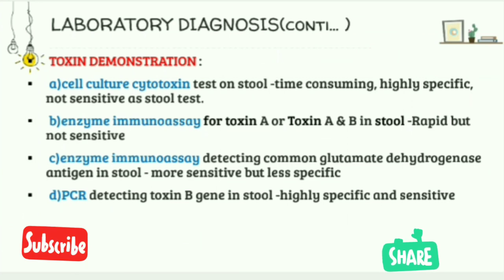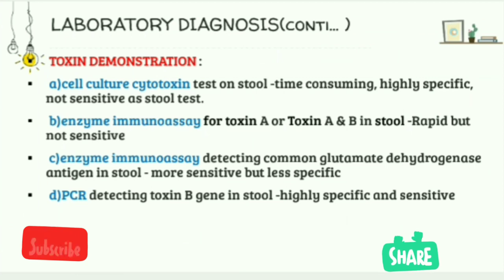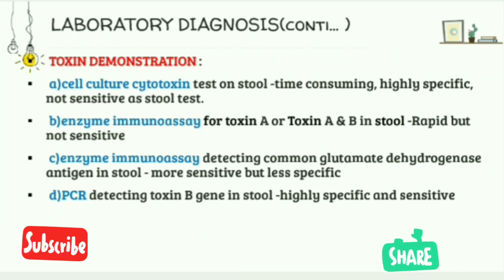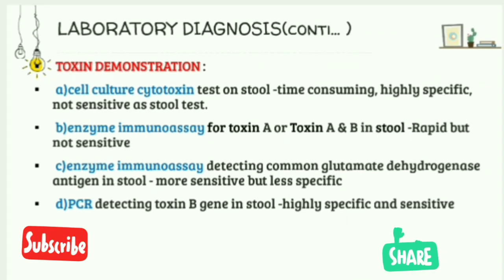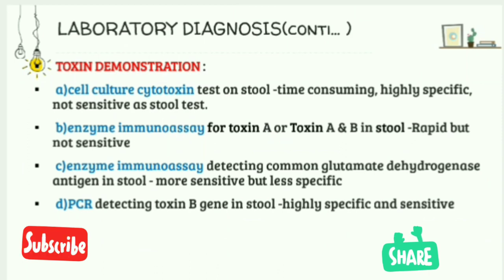The second method is enzyme immunoassay (EIA) for Toxin A, or Toxin A and B, in the stool — it is rapid but not sensitive. The third is enzyme immunoassay which detects the common glutamate dehydrogenase (GDH) antigen in the stool, found in toxigenic strains of C. difficile. This method is more sensitive but less specific.